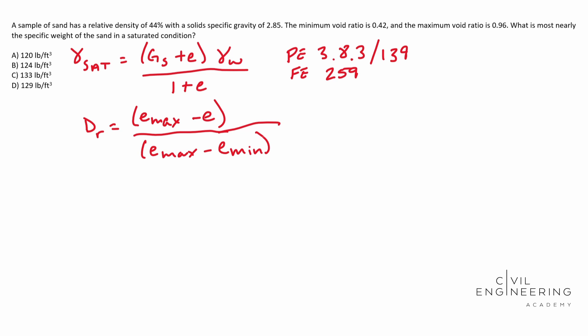Notice that we know our DR. We know e max, we know e min. All we have to do is solve for E. This formula is in PE 5.5.1 or page 281. For the FE you're going to be looking in page 260.